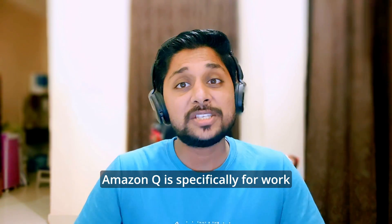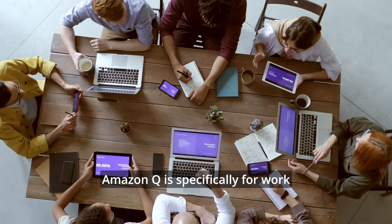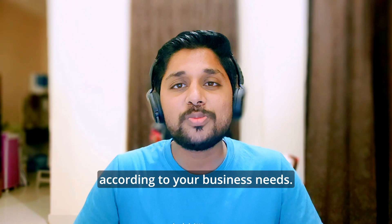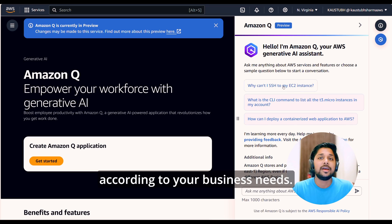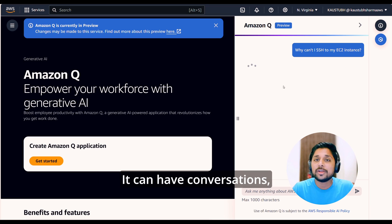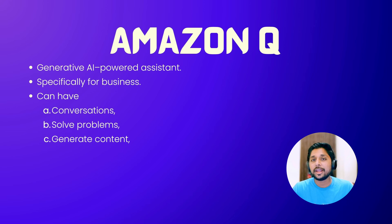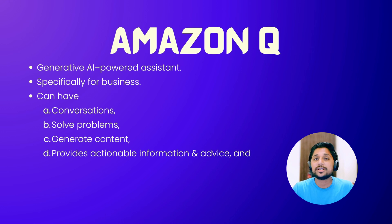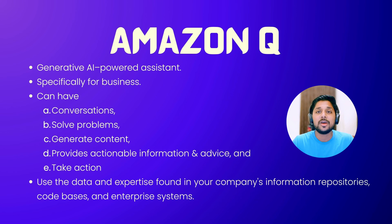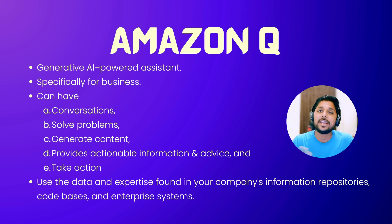Amazon Q is specifically for work and can be tailored according to your business needs. It can help with conversation, solve problems, generate content, provide actionable information and advice, and can take action using the data and expertise found in your company's information repositories, code bases and enterprise systems.